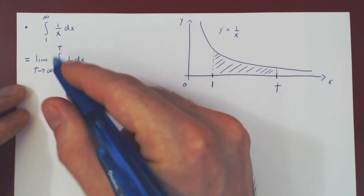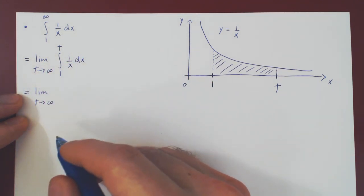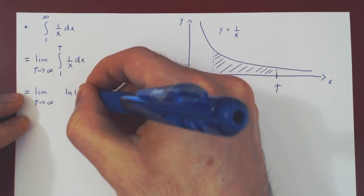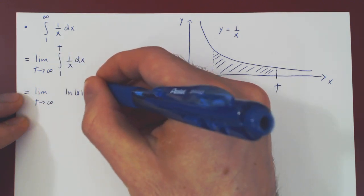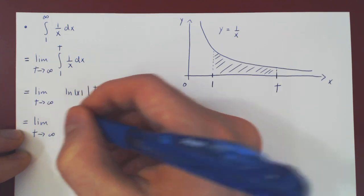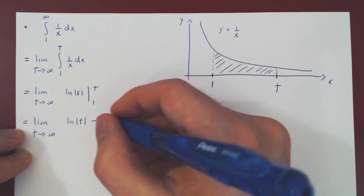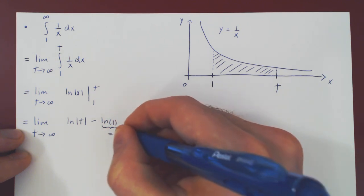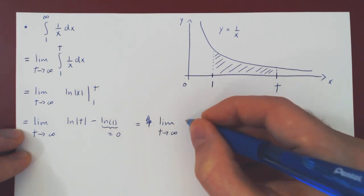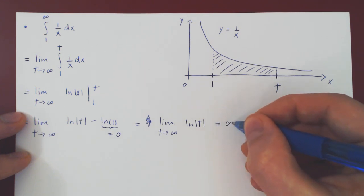Now we're good to go. Let's apply the fundamental theorem of calculus, and once we have done this, we will let t approach infinity. The antiderivative of 1 over x is ln|x|, evaluated from the lower to the upper bound. We get ln|t| minus ln|1|, but ln(1) equals 0. And we know that as t goes to infinity, so does ln(t). So this limit is positive infinity.